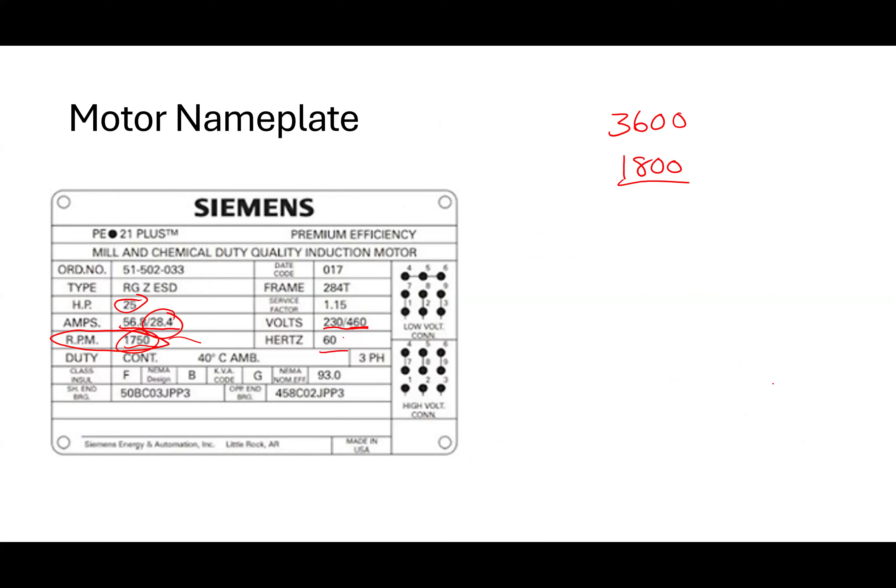Sometimes induction motors are called constant speed motors because they don't change speed much perceptibly — to go from no load to full load is a minimal change in speed. For a small motor, a one-horsepower motor, it's probably at like 1700. But for a large, serious motor, I've seen it be as high as 1780 for an 1800 RPM machine. What we refer to that as is how much it slips — how much it basically falls behind what its full speed rating is.